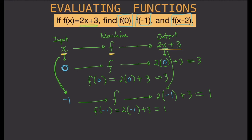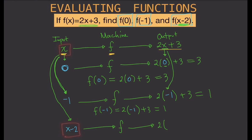For the last example, the process is the same, but our input is not a number — it's a quantity with a variable: x minus 2. We feed x minus 2 to our function. Wherever x appears in the function, we replace it with x minus 2. So instead of writing x, we write x minus 2. Then we copy the remaining terms that have no x — but if any other term has an x, replace that with x minus 2 as well.